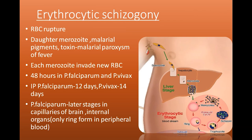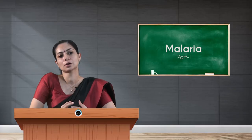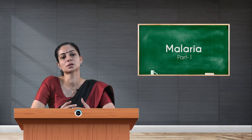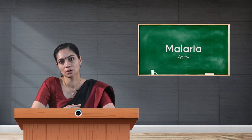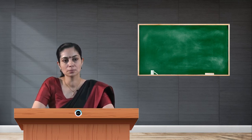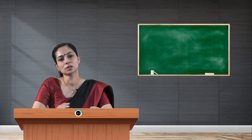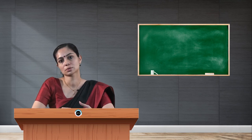Only the early ring stage can be demonstrated in the peripheral blood in the case of Plasmodium falciparum, because later stages happen in the capillaries of the brain and internal organs. Therefore, only the ring form can be detected in peripheral blood. The malaria chapter will be continued in the next video.